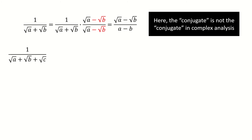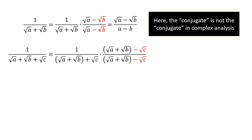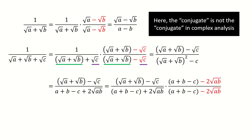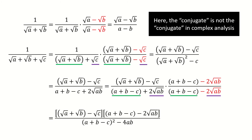Next let's see the three-term case. We can apply the similar trick by multiplying the conjugate part, but here we put (√a + √b) into the parentheses, so we treat it as the two-term case. And then we expand this complete square, so we got here. Next, we multiply the conjugate part again to the numerator and denominator, group them together, treat them as the two-term case, and we got here. You can see this denominator has been rationalized.